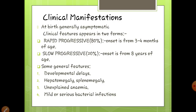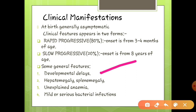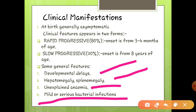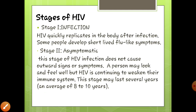Coming to clinical manifestation: at the time of birth, generally the symptoms are asymptomatic. Asymptomatic symptoms are those which do not cause any outward signs — they basically weaken our immune system, and they continue to progress for eight to ten years. At the time of birth, the signs and symptoms in a child include development delays, not proper formation of certain organs like liver and spleen, unexplained anemia, and mild to serious bacterial infections.